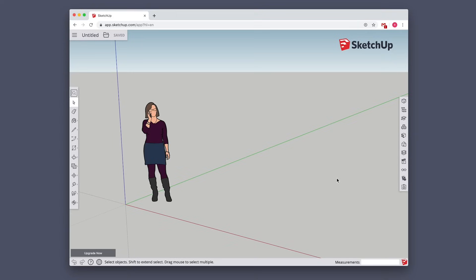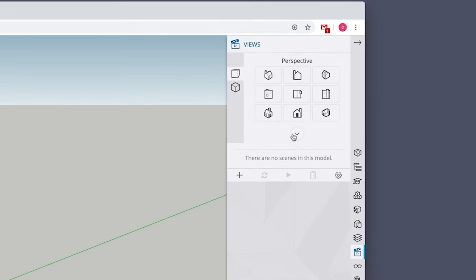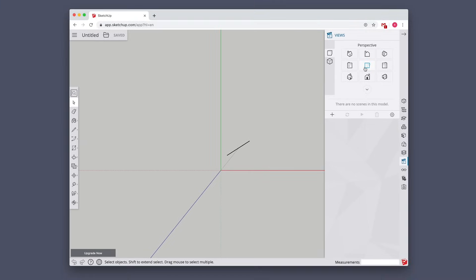If you're using the free web-based version of SketchUp, you won't have access to the template you need, but you can get a close enough view by switching to a top view from the Views menu. Then what? You're ready for the next tip.